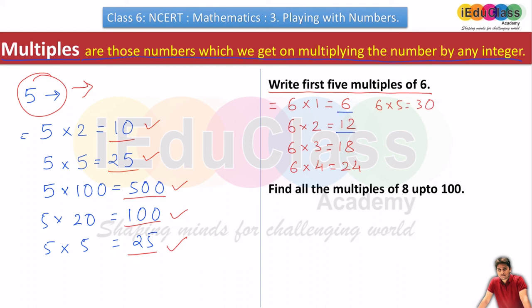So all these numbers - 6, 12, 18, 24, 30 - are five multiples: 6×1, 6×2, 6×3, 6×4, and 6×5. You can find all the multiples of 8 up to 100 the same way.